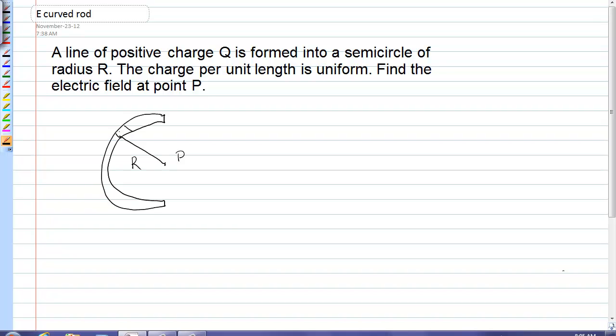I need to divide my rod into little charge elements dq, and because this is a curved rod I'm going to call the length of that dq ds. Now at point P the electric field due to dq points down like this, call that dE, and it has two components. It would have an x component, dEx, and a y component, dEy.